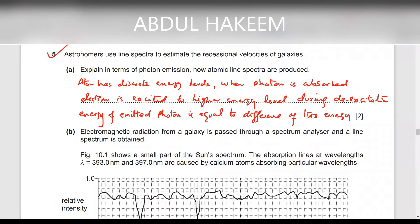Another question: an astronomer used the line spectra to estimate the recessional velocity of galaxies. Explain in terms of photon emission how the atomic line spectra are produced. The answer is: an atom has discrete energy levels. When a photon is absorbed, the electron is excited to a higher energy level. During de-excitation to a lower energy level, the energy of the emitted photon is exactly equal to the difference in energy between the two energy levels.